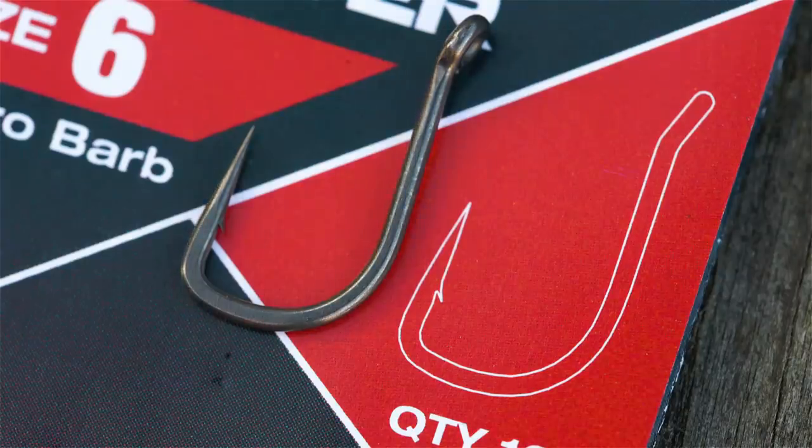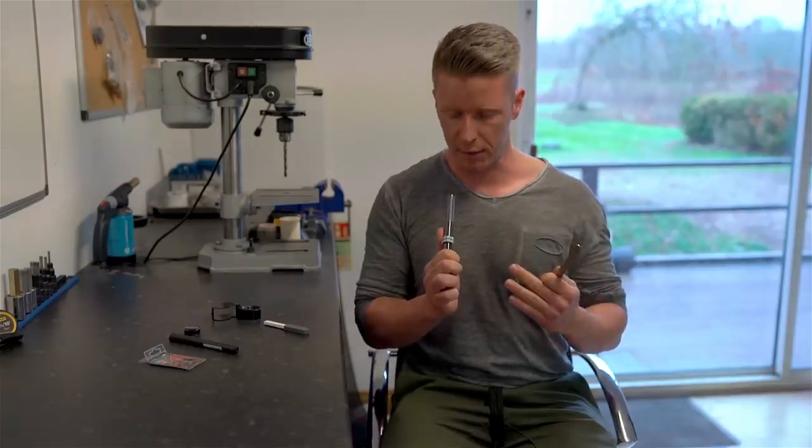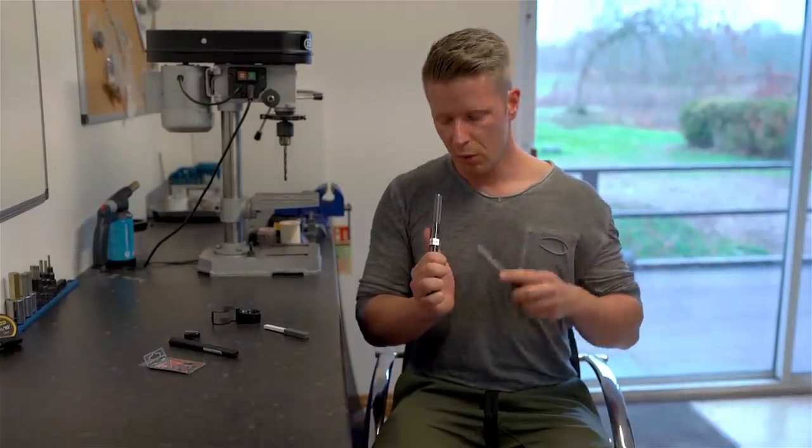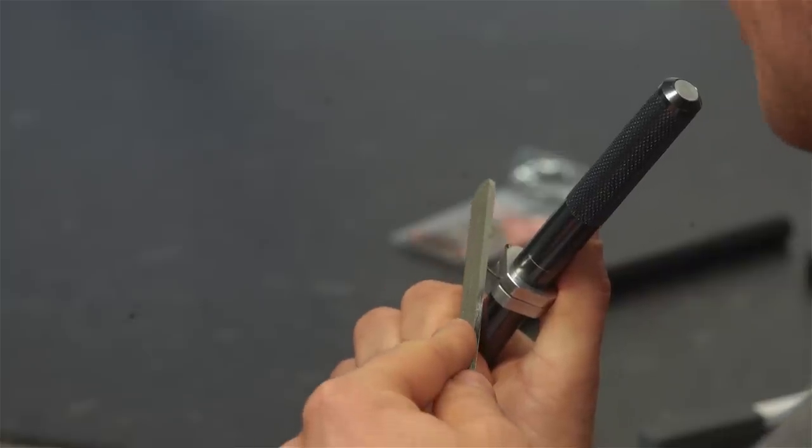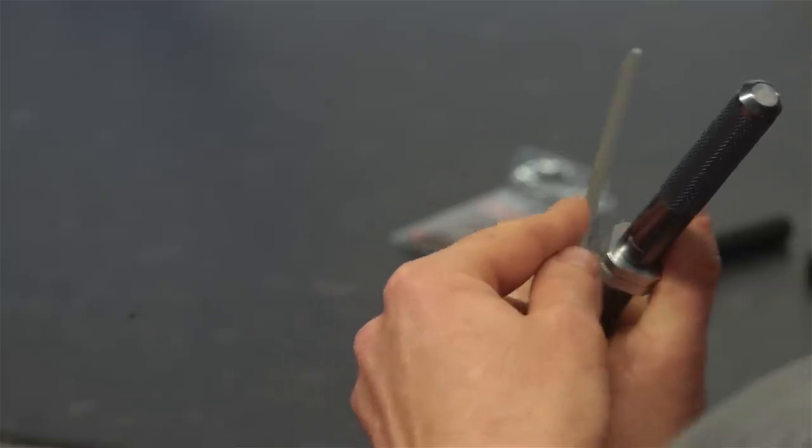Obviously there's a difference between hooks with a straight point or hooks with a beak point. Here we have a hook with a beak point so we have to follow the contour of the hook to get an optimum result. If it would be a hook with a straight point, we would just start at the barb and gently without much pressure move towards the point of the hook.